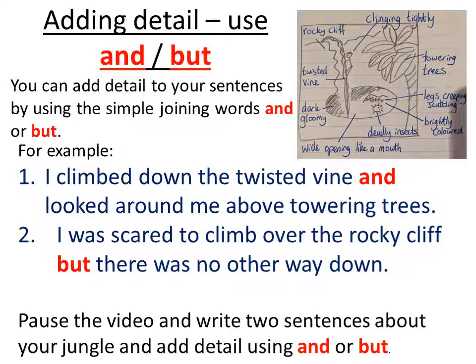This is our first bit today. Our first trick that we are going to use to add detail is to use the word 'and' or 'but'. We can add detail to our sentences by using these simple joining words. I looked at my picture and I thought about what I could write. I looked at my twisted vine and the towering trees and put both of those ideas into one sentence. Here it is in blue: 'I climbed down the twisted vine and looked around me above towering trees.' I've used 'and' and put two ideas in one sentence, which makes it a more detailed, expanded sentence.